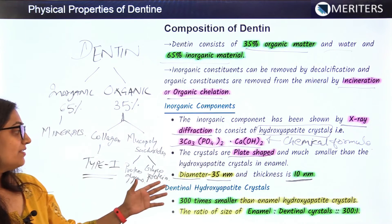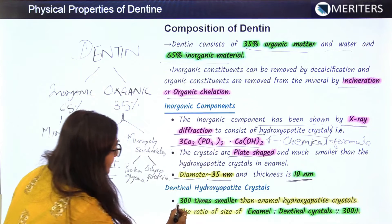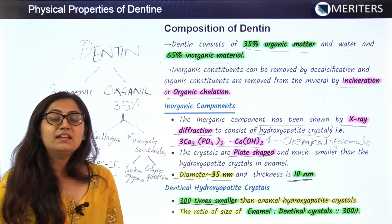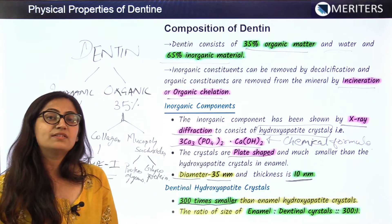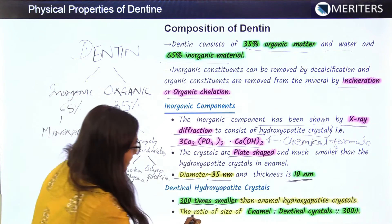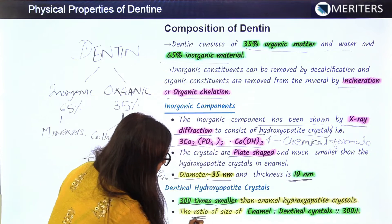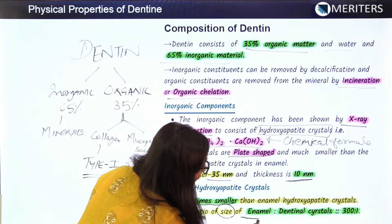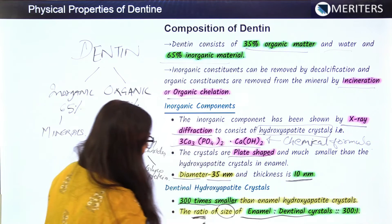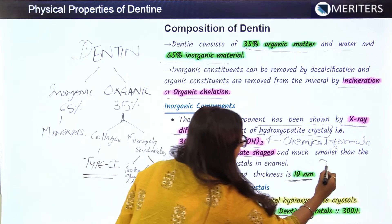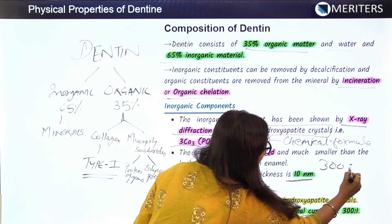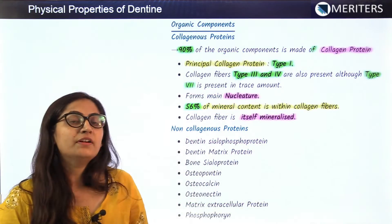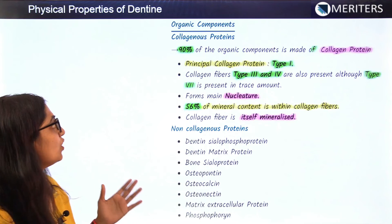Dentine hydroxyapatite crystals are 300 times smaller than the enamel hydroxyapatite crystals. The ratio of the size of enamel to dentine crystals is about 300 to 1.